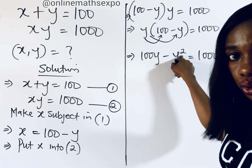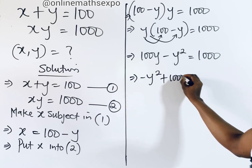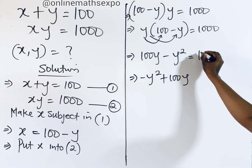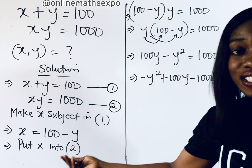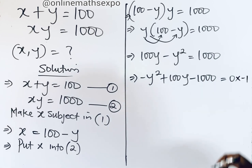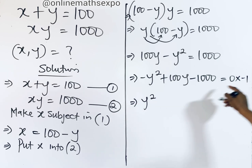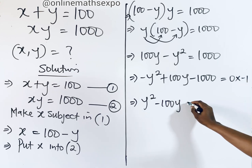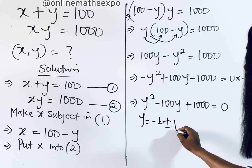We rearrange to get: negative y squared plus 100y minus 1000 equals zero. Since this starts with a negative leading term, we multiply the entire equation by negative one. This gives us y squared minus 100y plus 1000 equals zero. Now we can apply the quadratic formula: y equals negative b plus or minus the square root of b squared minus 4ac, all divided by 2a.